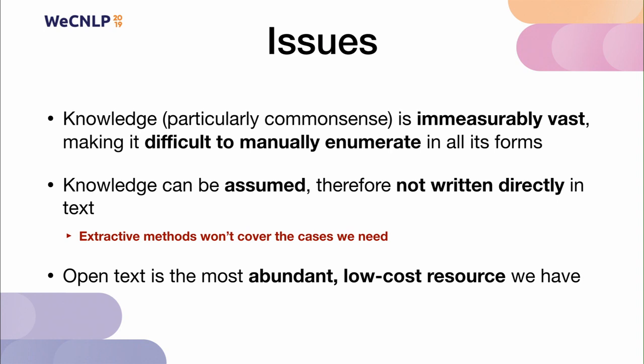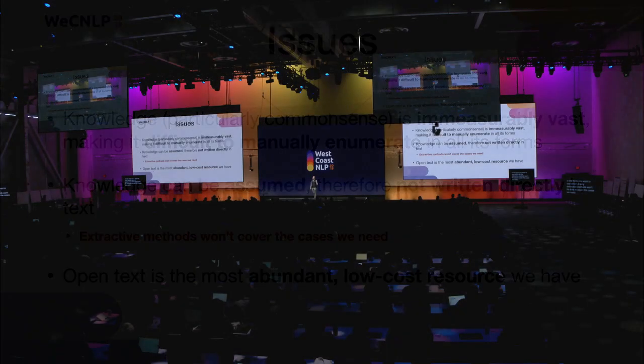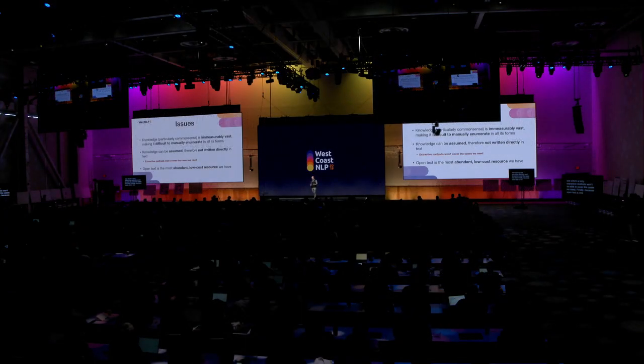The issues we want to take into account are: first, knowledge, particularly in the common sense variety, is immeasurably vast, which makes it difficult to manually enumerate in all its forms. Second, because knowledge can be assumed, it's oftentimes not directly written in text in the form you'd want to see, which is why extractive methods won't necessarily cover the cases we need. But finally, because open text is one of the most abundant low-cost resources we have, we want to be able to utilize it in some way.